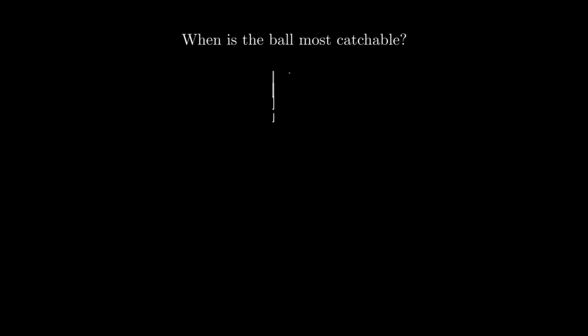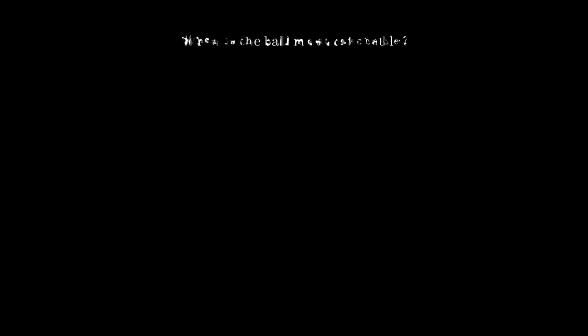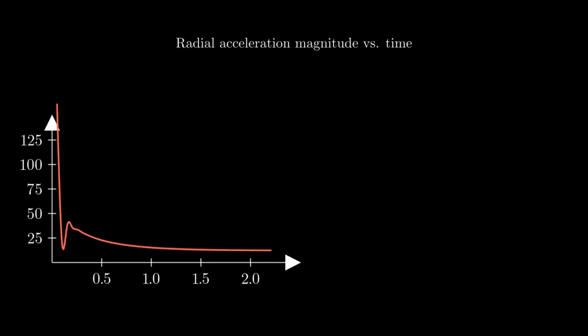The equation of d²s/dt² tells us the change in how fast the ball is speeding towards you. Lower values mean smoother, more catchable passes. By plugging in the values for our example, we can find out where exactly the pass is most catchable. When we graph out our equation, we find a specific point where the values are the smoothest, making it the easiest to catch the ball at this time.